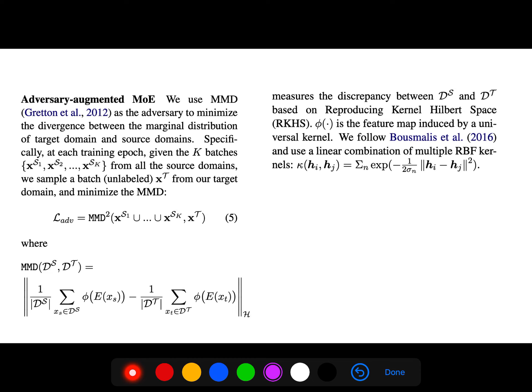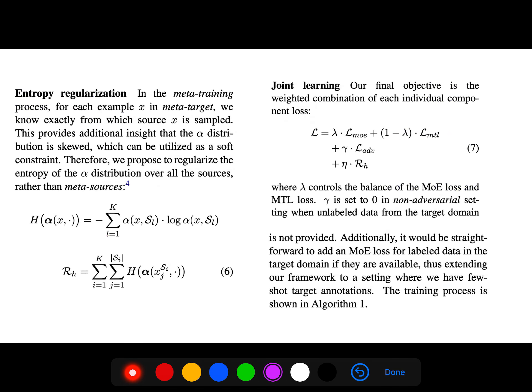They also use that MMD, maximum mean discrepancy, as the adversary to minimize divergence between marginal distribution of target domain and source domains. Specifically at each training epoch, given the k batches from all source domains, we sample a batch from our target domain and they minimize this MMD. They also have entropy regularization. In the meta-training process, for each example we know exactly from which source exists samples, so this provides additional insight that the α distribution is skewed, which can be utilized as a soft constraint. Therefore we propose to regularize the entropy of the α distribution over all sources rather than meta-sources.